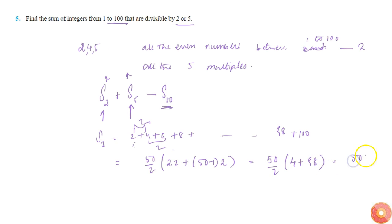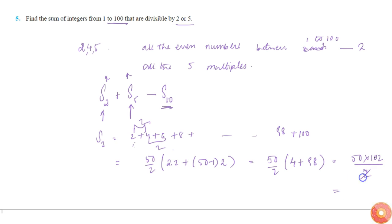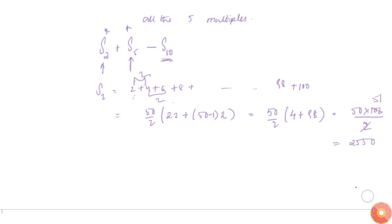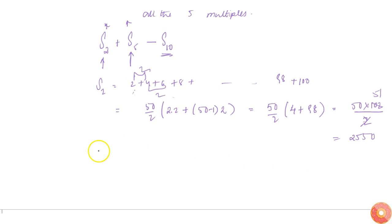So that becomes 50 into 102 divided by 2, which simplifies to 25 times 102, giving us 2550. Now the sum of all terms which are multiples of 5: S5 will be equal to 5 + 10 + 15 + ... up to 100.